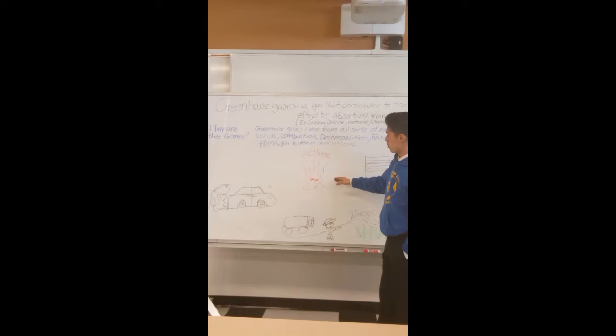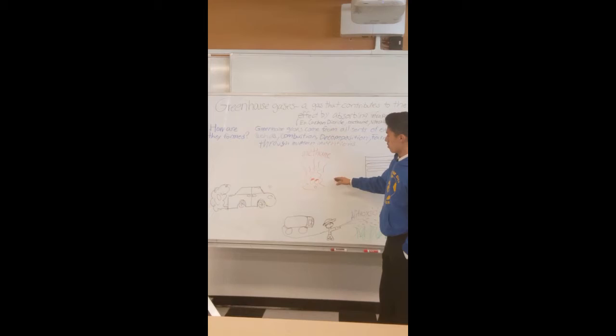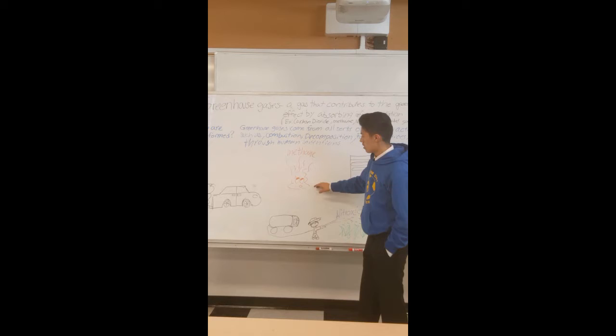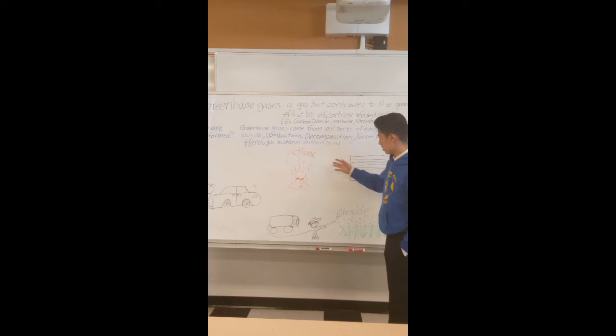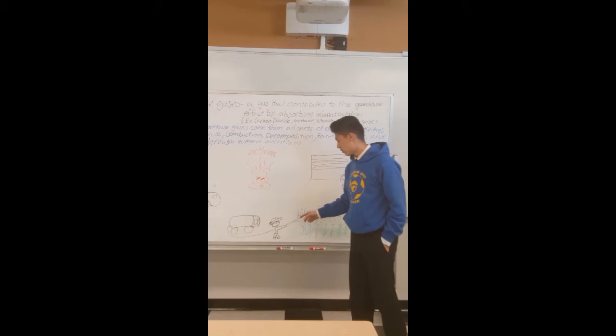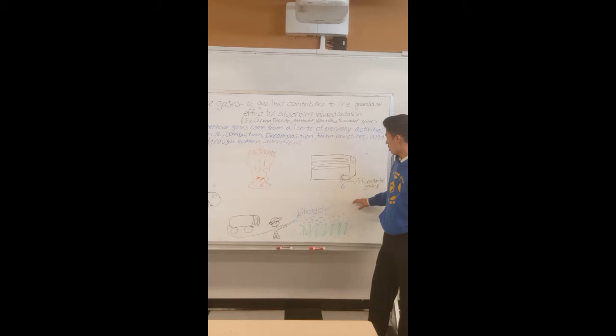Another one is through decomposition, where the sun's rays heat the waste of humans and animals, which emit methane. Our next one is nitrous oxide, which is released through pesticides that farmers use for their crops. And our last one is fluorinated gases that are emitted through technology such as air conditioners, which leak and emit fluorinated gases. And these are the greenhouse gases and how they are formed.